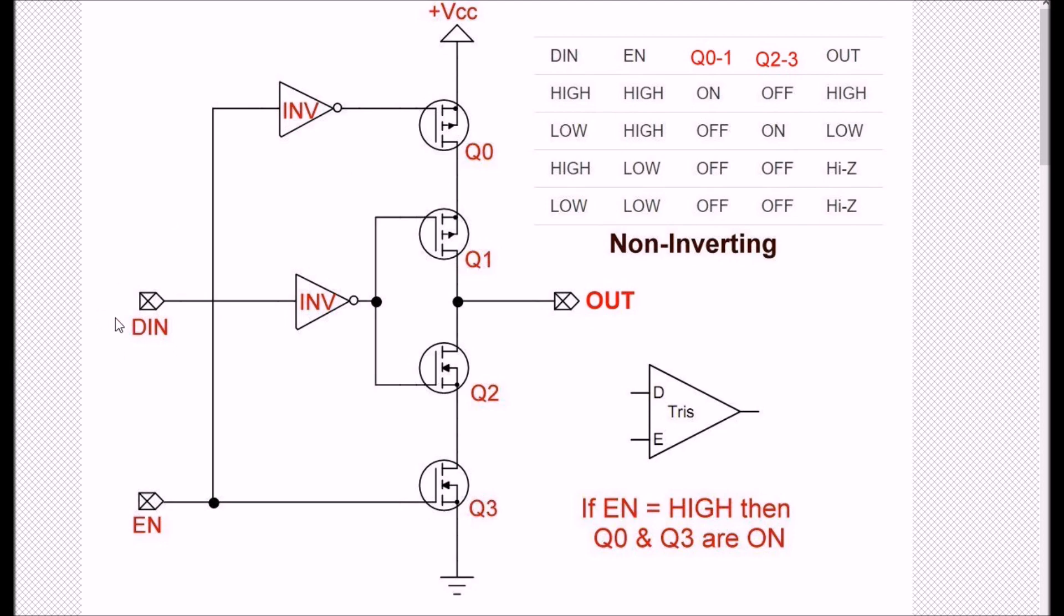Let's take DIN low. The low is inverted to a high. The high will turn off Q1 and turn on Q2. So now I have a current path from the output through Q2 and Q3 to ground.